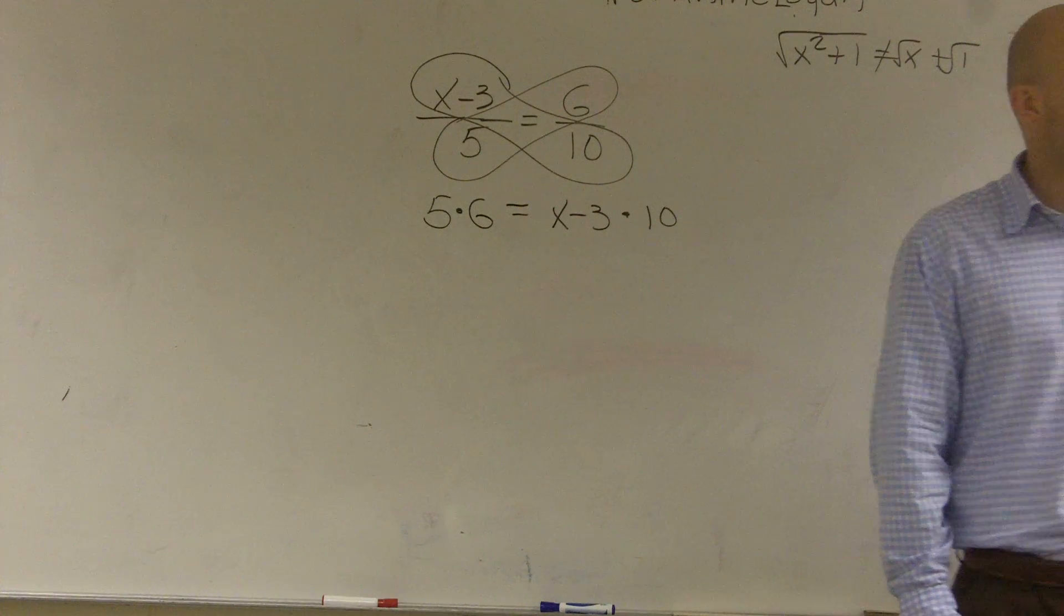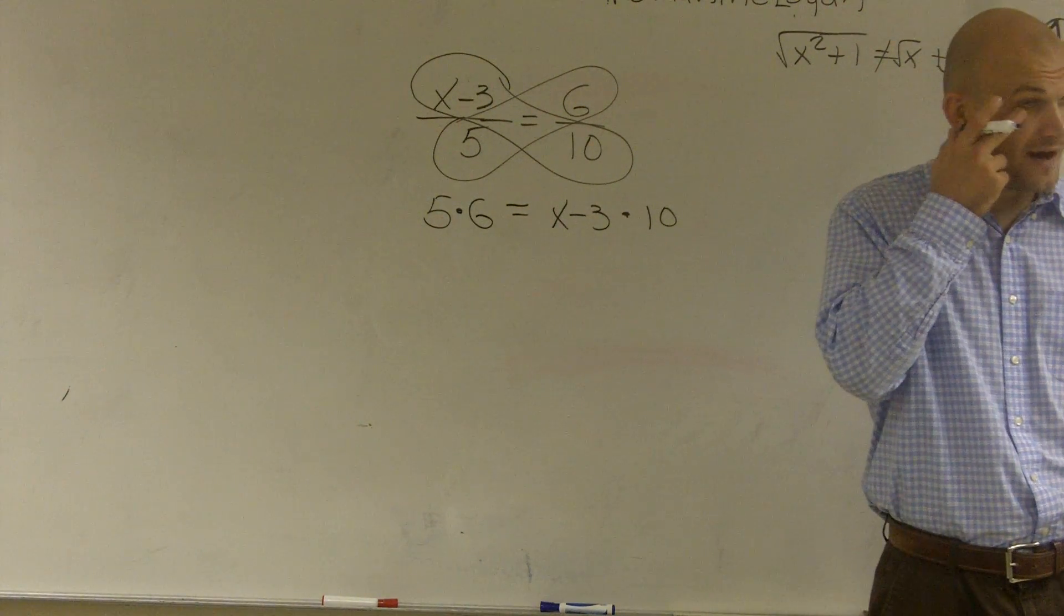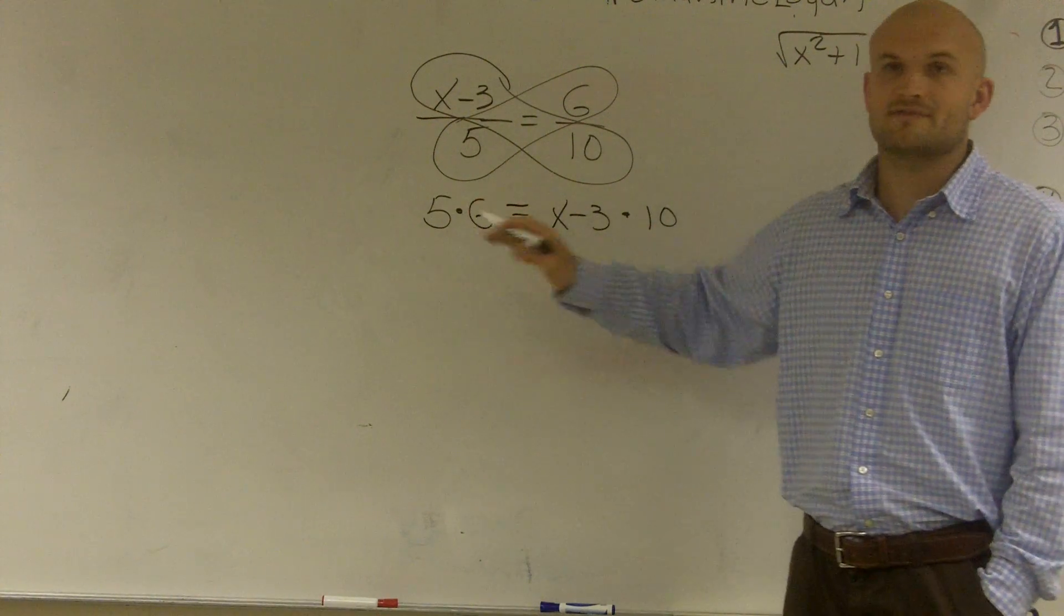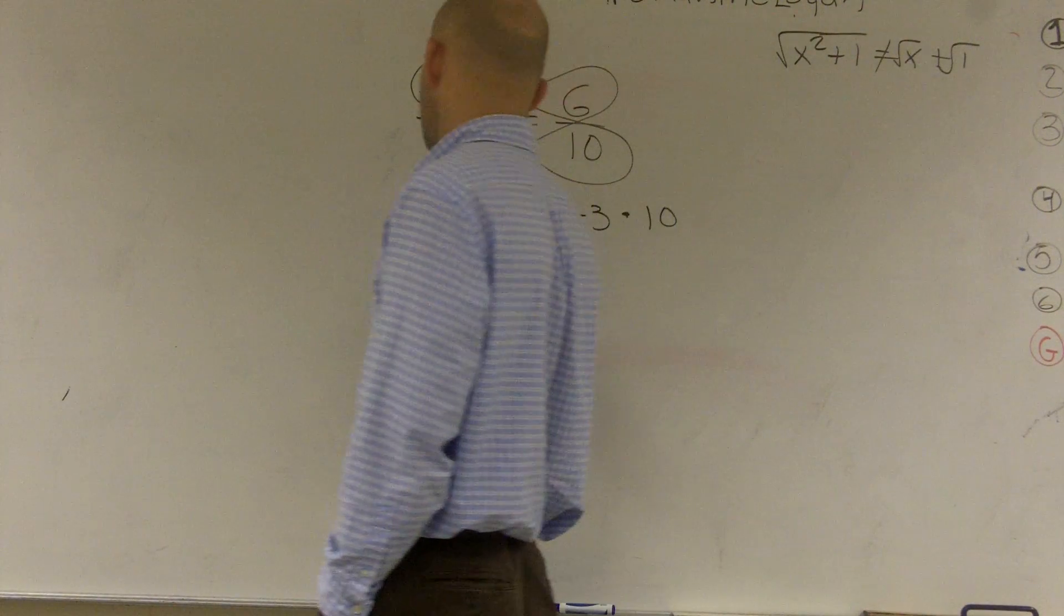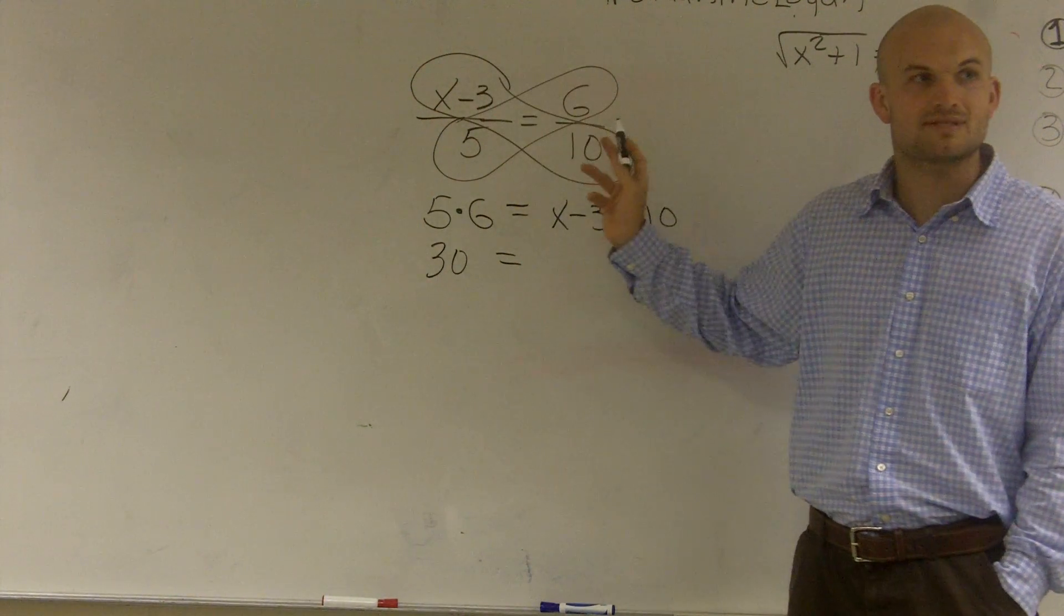So here's where our students start to make their mistakes. Now if you didn't take your test and you're talking right now, then you probably would make the same mistake. First thing, 5 times 6 is 30. Equals. Now this says x minus 3 times 10.